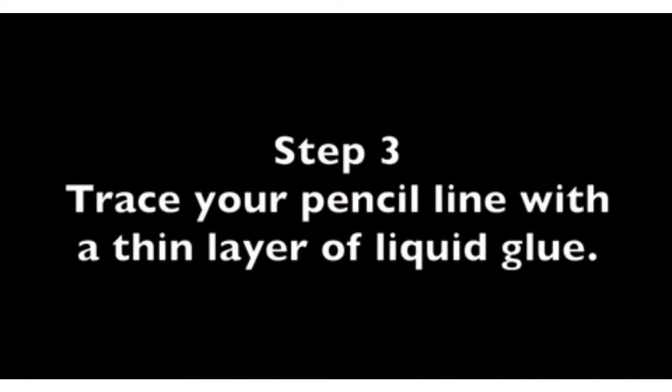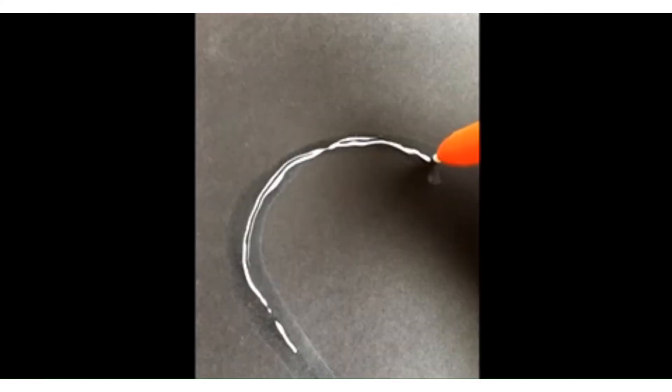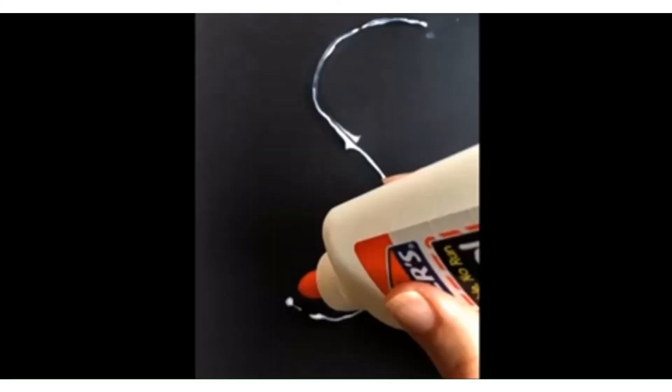Step 3. Pick up the yarn off of your paper and trace the pencil line with a thin layer of liquid glue. Notice that you only need a small amount of glue to stick down the thin yarn.